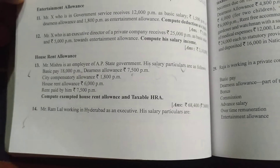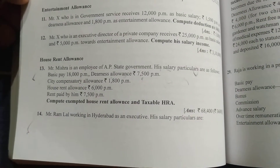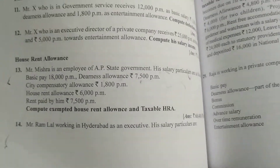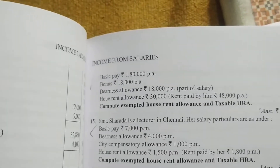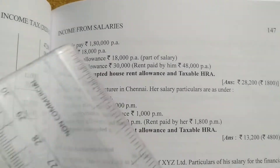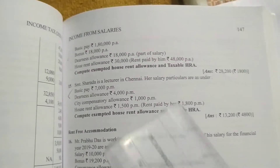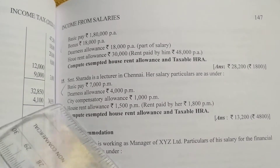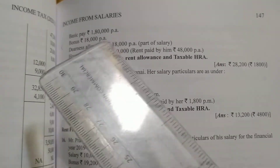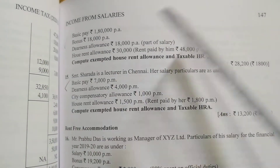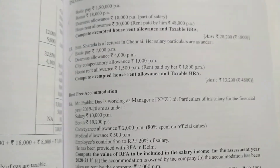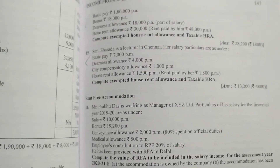Now we do one more problem on page 147 — the 14th problem. Mr. Ram Lal is working in Hyderabad as an executive. His salary particulars are given per annum: basic pay 1,80,000, DA 18,000 per annum and it says 'part of salary' — so we must include this in salary. House rent allowance is 30,000, rent paid is 48,000 per annum. He is staying in Hyderabad, which is non-metro.